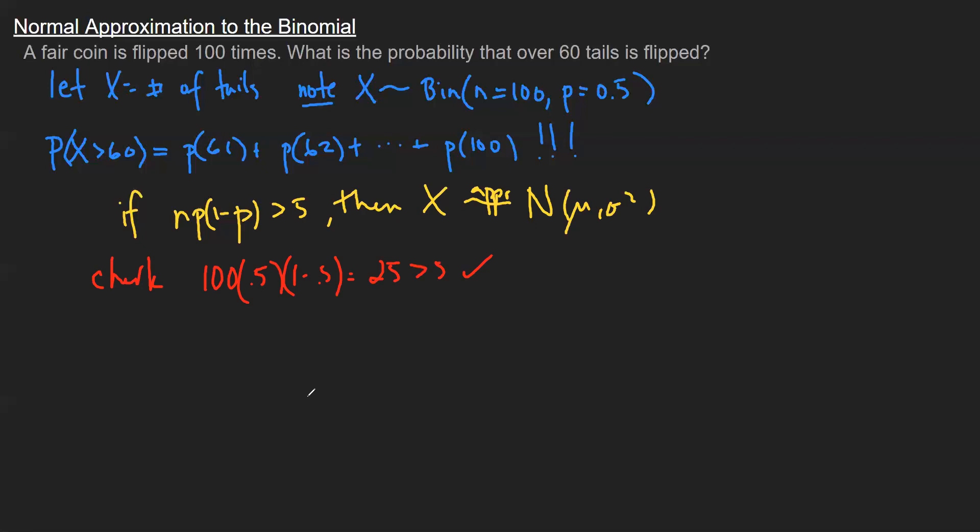Well, that means I don't have to do all of these sums to answer this question. I can take this original distribution here. And since my condition is satisfied, that allows me to approximate this X. I'll include that this is an approximation using a normal distribution.